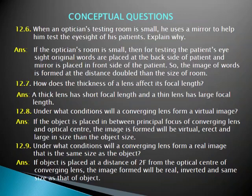If an optician's room is small, then for testing the patient's eyesight, the original words are placed at the back side of the patient and a mirror is placed in front of the patient. So the words are placed on the back side of the patient and in front of the mirror.